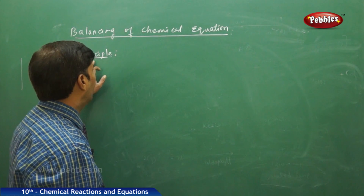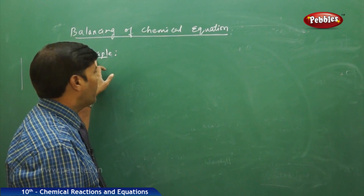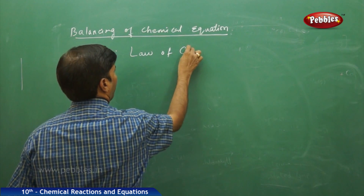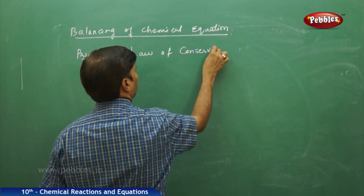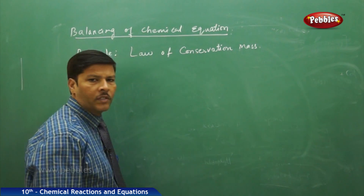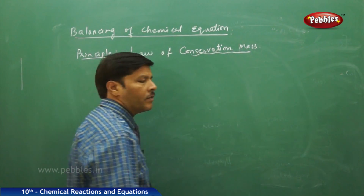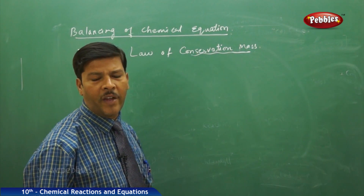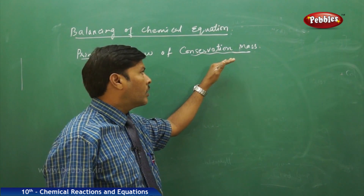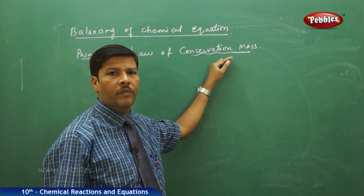To balance a chemical equation, the chemical reaction has to depend on the principle that is the law of conservation of mass. This law is supported by the fact that atoms or molecules are neither created nor destroyed — that is the law of conservation of energy already we know.